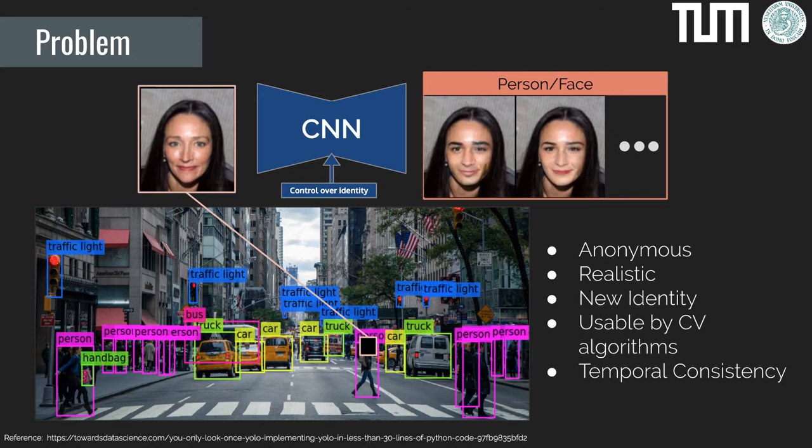The new image still needs to be recognizable as a face by computer vision algorithms, and needs to be anonymized consistently over time, so we can still track it without identity switches.